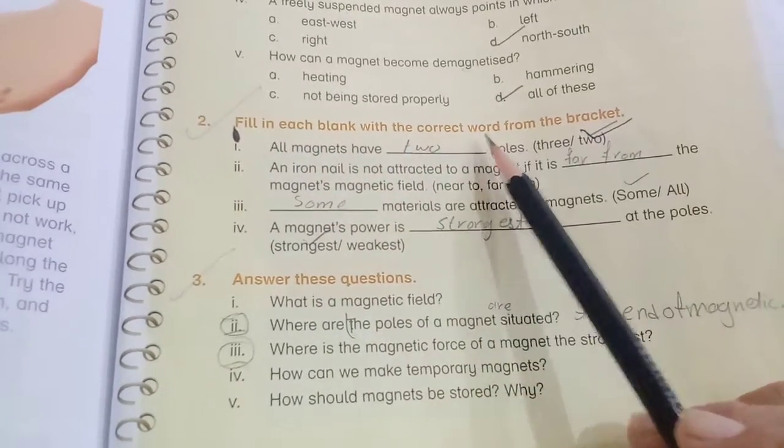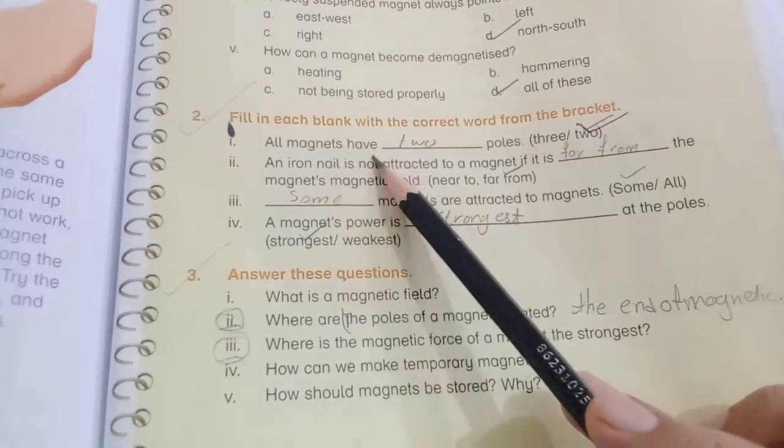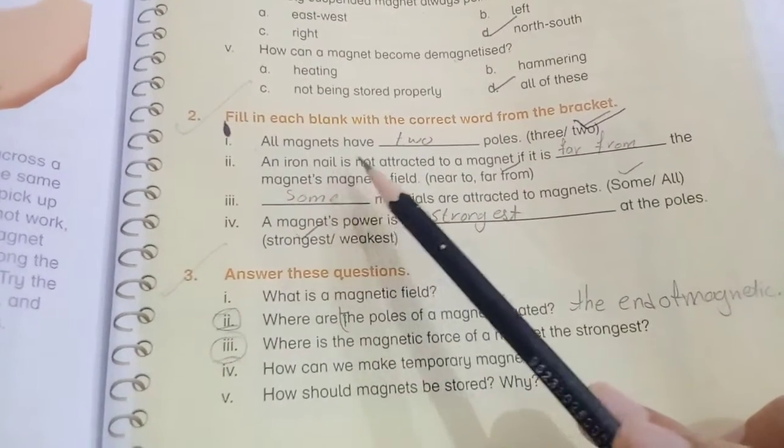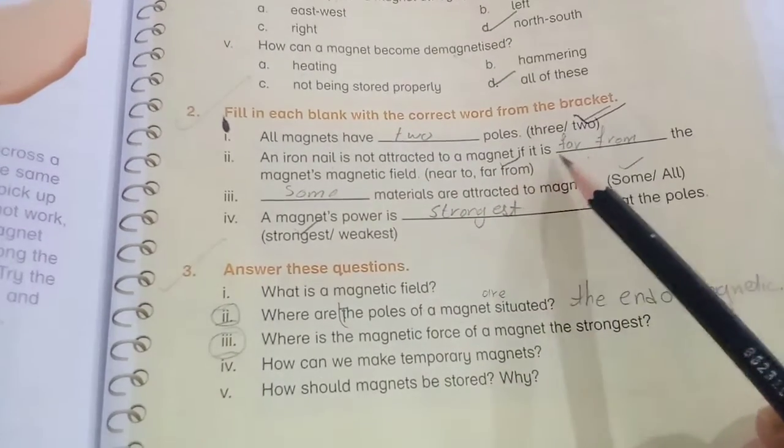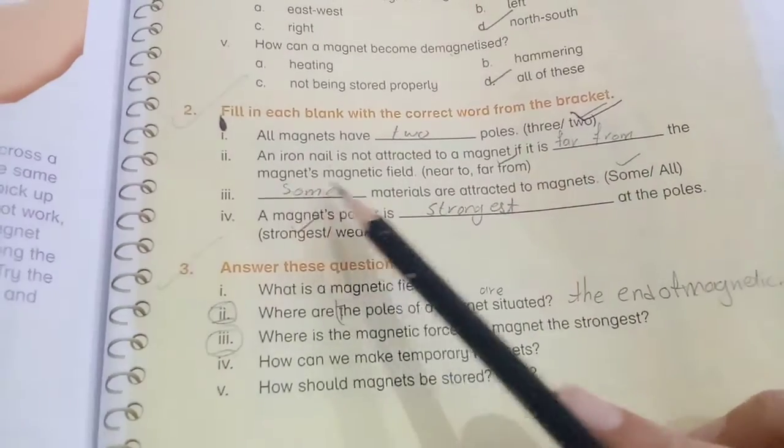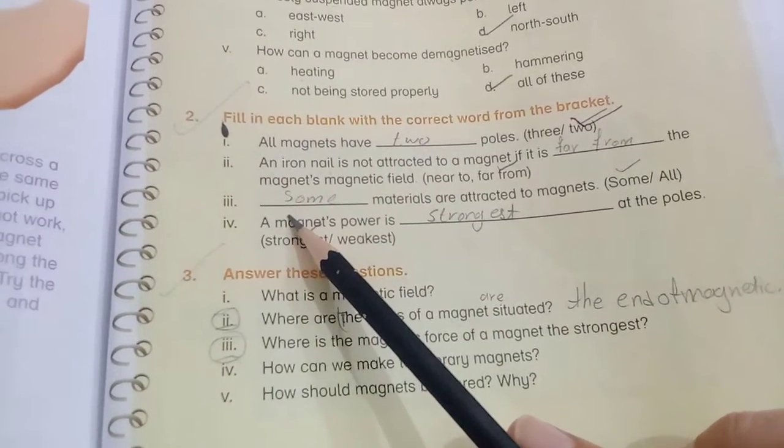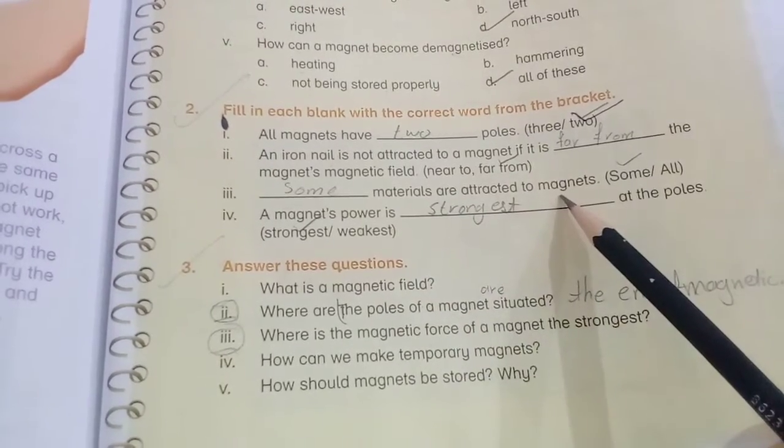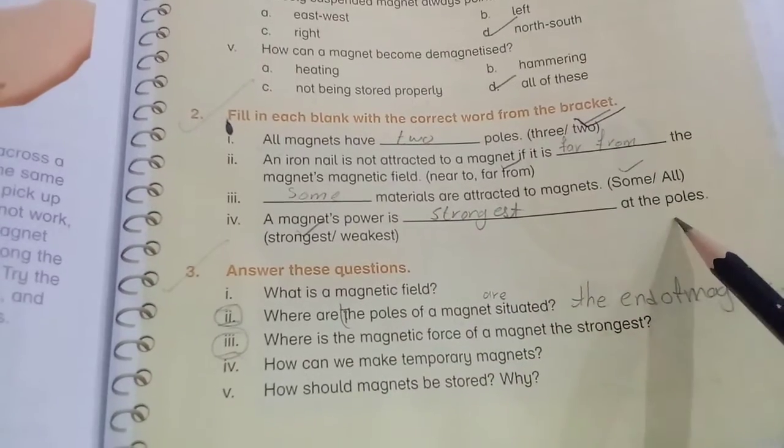Fill in the blanks with the correct word from the bracket: All magnets have two poles. An iron nail is not attracted to a magnet if it is far from the magnet's magnetic field. Some materials are attracted to magnets. A magnet's power is strongest at the poles.